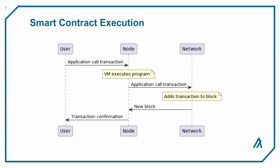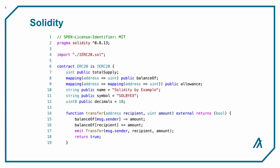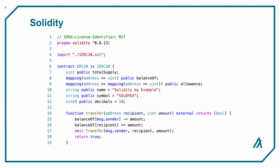One of the biggest differences between the EVM and the AVM is the languages used to write smart contracts. EVM smart contracts are commonly written in Solidity, a statically typed high-level language whose syntax resembles JavaScript. On Algorand, the core language for smart contracts is Teal, which is an assembly-like language for the AVM.